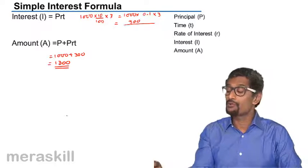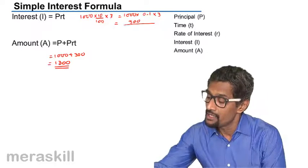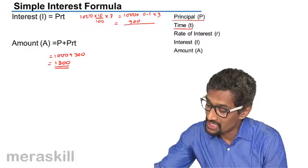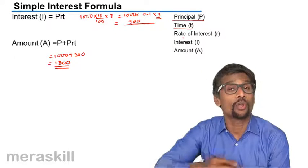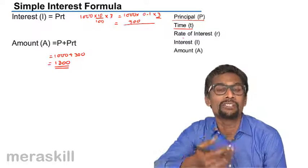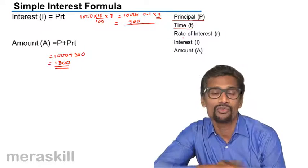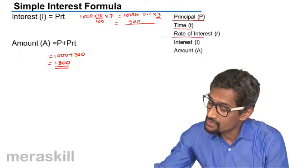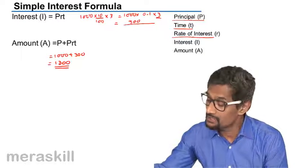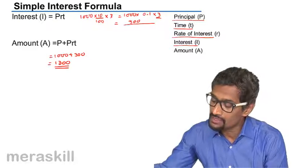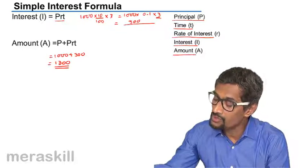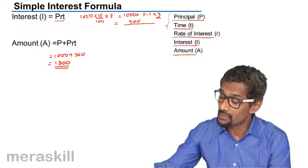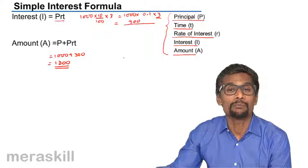The formulae we keep using involve: the principal P, the time T which is the period in years (if the period is given in months, you divide — for example, 3 months becomes 3/12), the rate of interest R as a percentage, the interest amount I = PRT, and the total amount obtained by adding interest to the principal.